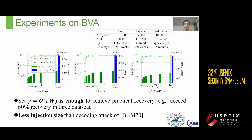We present the actual recovery rate and injection size of BVA for different gamma values, compared with the decoding attack, on three datasets: Enron, Lucene, and Wikipedia. We observe that setting gamma equal to 0.1×|W| is sufficient to achieve a recovery rate of over 60% while requiring much less injection size than the decoding attack. For example, on the Enron dataset, the decoding attack requires an injection size of 10^12 to achieve around 90% recovery rate, whereas our attack only requires 10^8 — a decrease of 4 orders of magnitude — to achieve the same recovery.